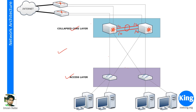In the collapsed core, the distribution and core layer devices are combined into one function. You have the access layer connected directly to this collapsed core layer. The collapsed core layer devices are connected to each other, but access layers are not. If an access layer switch wants to communicate with another, it has to go through the collapsed core layer switches and then back.